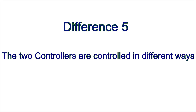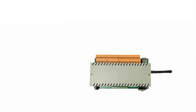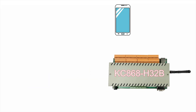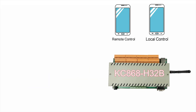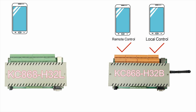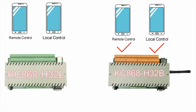Difference 5: the two controllers are controlled in different ways. The H32B can be used for both remote control and local control, but the H32L cannot — it can only choose one mode to work.